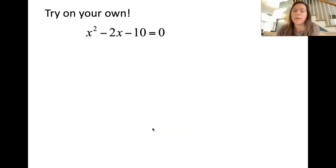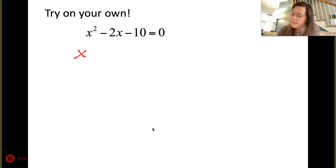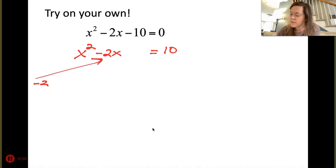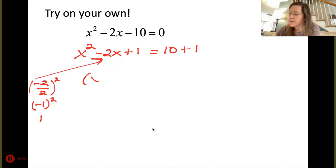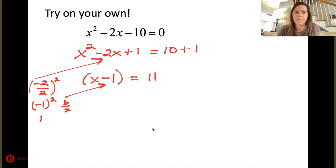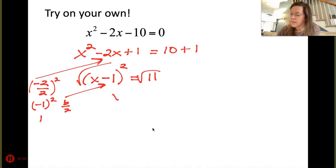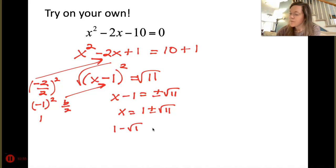Practice: x² - 2x - 10 = 0. The leading coefficient is 1, so move the 10 over: x² - 2x = 10. Take b = -2, divide by 2 to get -1, then square to get 1. Add 1 to both sides. The left factors to (x - 1)² — the binomial term is always b/2. So (x - 1)² = 11. Square root both sides: x - 1 = ±√11. Add 1: x = 1 ± √11. Set notation: {1 - √11, 1 + √11}.